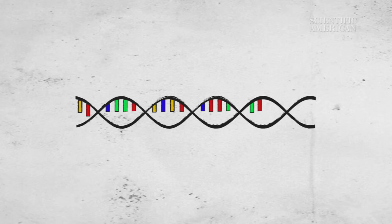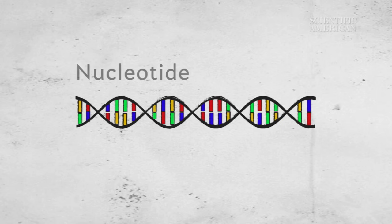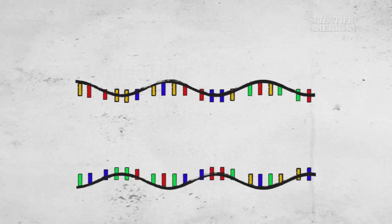A DNA molecule is made up of a sugar backbone and four flavors of a molecule called a nucleotide. These nucleotides are arranged along the backbone in a unique order.